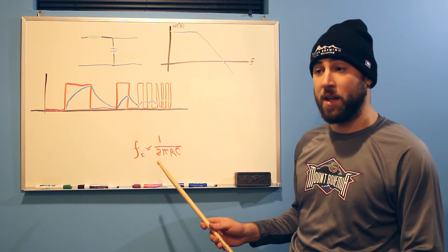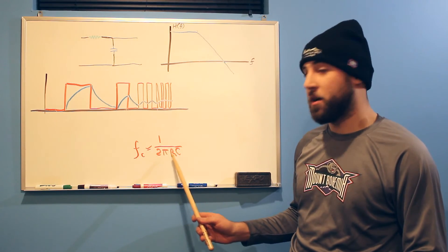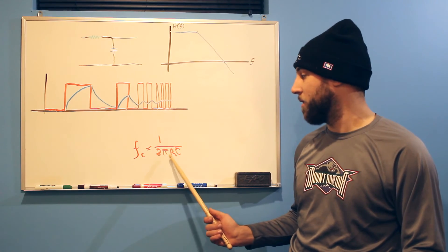If we wanted it in radians per second, we would just take away the 2 pi. Just get rid of that part.